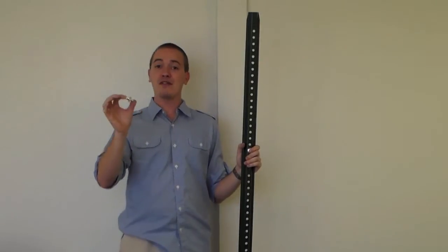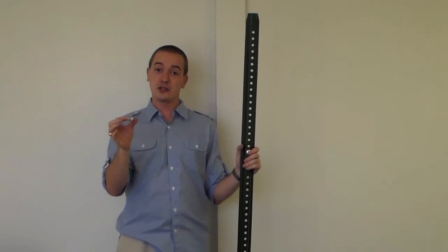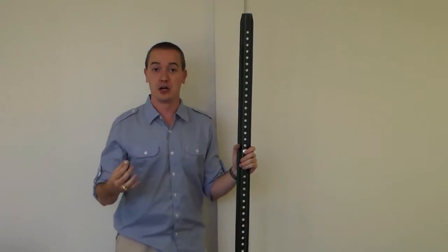This is a drive rivet. Now a drive rivet is a very useful product if you're looking to install a polydome to a U-post.